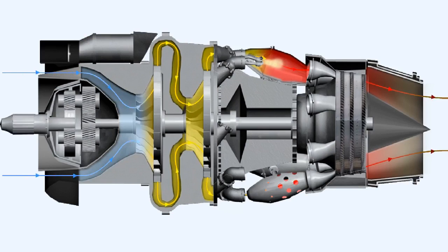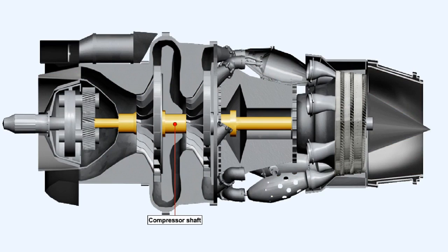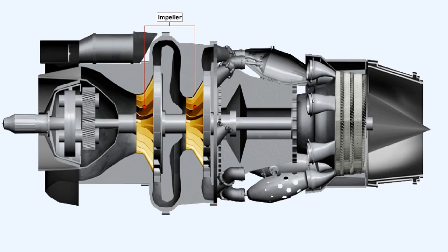We'll now examine the principles of the centrifugal compressor. The turbine assembly, attached to the compressor by a shaft, converts the pressure, velocity and heat of the gases passing through the turbine into mechanical energy, which is used to drive the impeller of the compressor round at high speed.